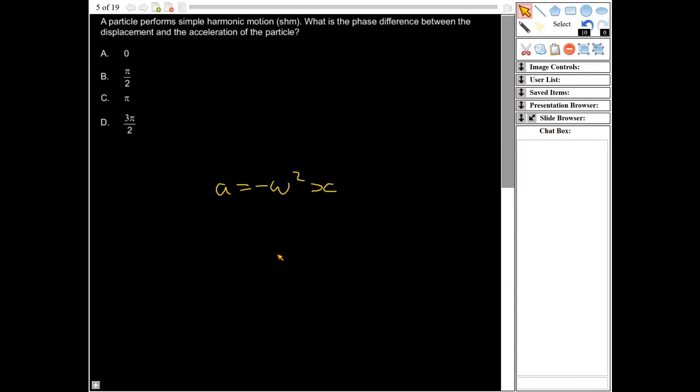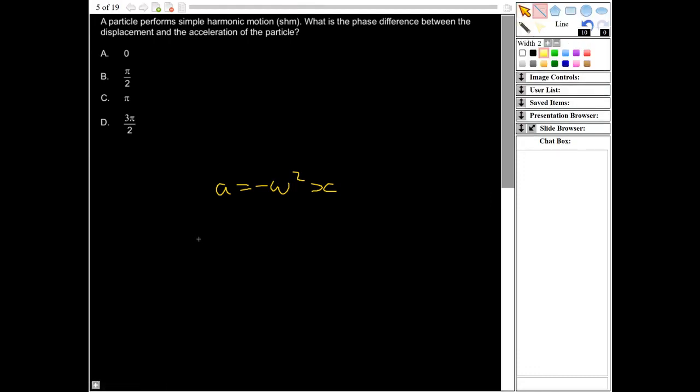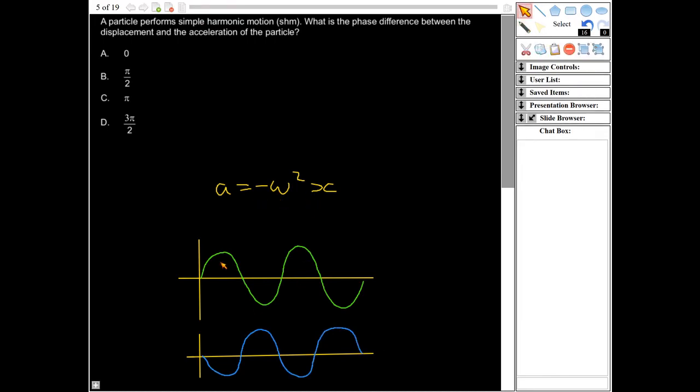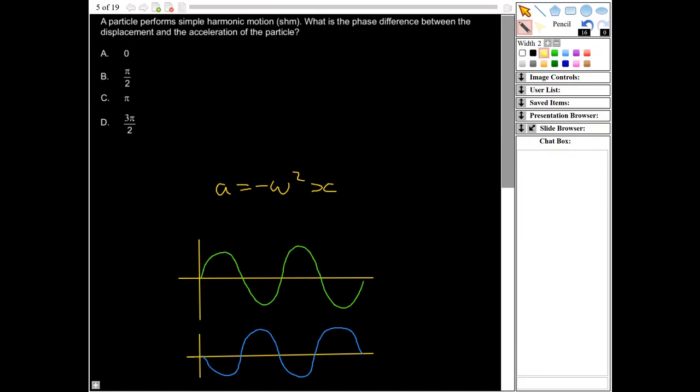Okay, so as something undergoes simple harmonic motion, sort of like that, as it's moving away to the left, the acceleration will take it back to the beginning, and as it's moving away to the right, the acceleration will bring it back to the center. So if I sketch what those look like, if that's the displacement there, just a simple sine wave, then the acceleration should be exactly opposite to that, like that. Okay, that's what this equation here is telling us. So the phase difference between those is there half a cycle out of sync or pi radians out of sync, which is answer C.